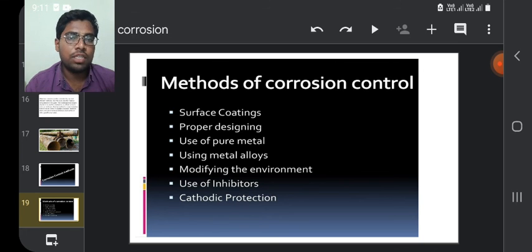Let's see some of the methods of corrosion control. Surface coatings, proper designing, use of pure metal, using metal alloys, modifying the environment, use of inhibitors, cathodic protection.